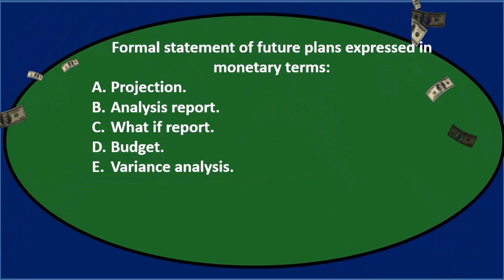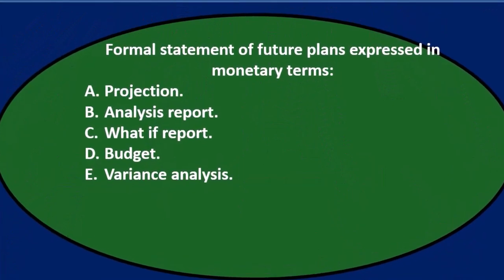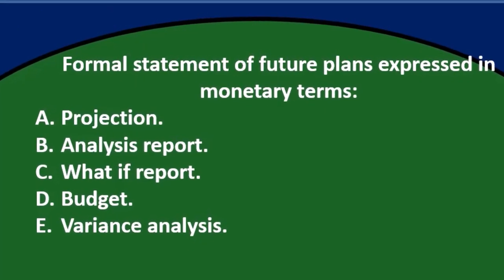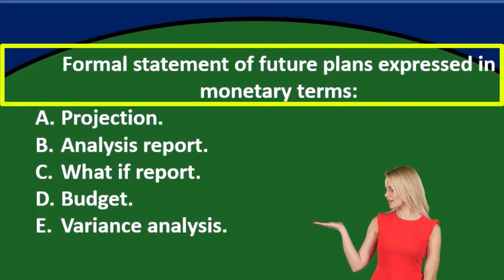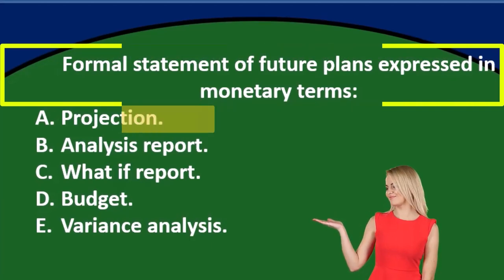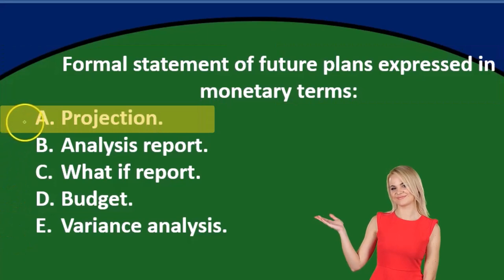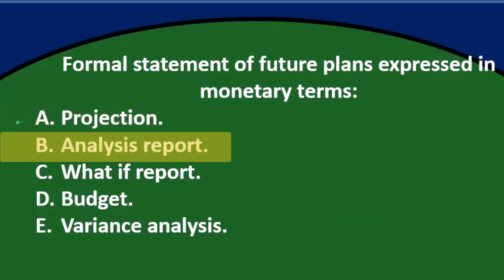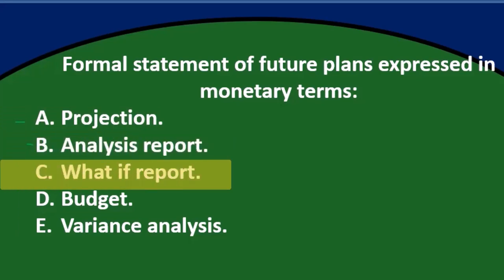We'll go through this again and then use the process of elimination. Formal statement of future plans expressed in monetary terms. A. Projection — that sounds like a reasonable term, I'll keep that for now. B. Analysis report — that sounds kind of reasonable, I'll keep that for now. C. What if report — that seems like a fairly strange named report, possibly not a very formal report. I'm going to cross that out.